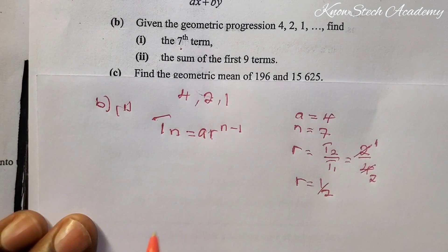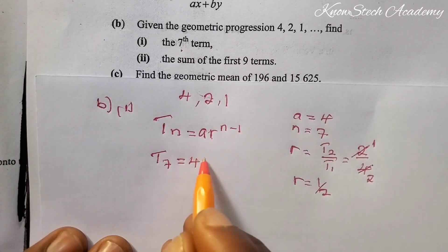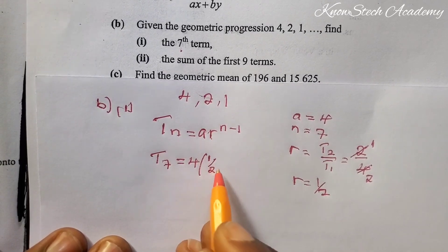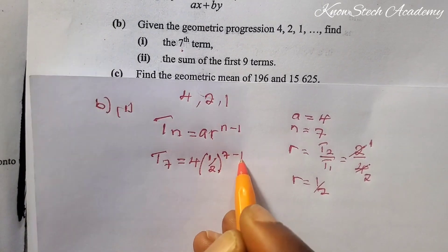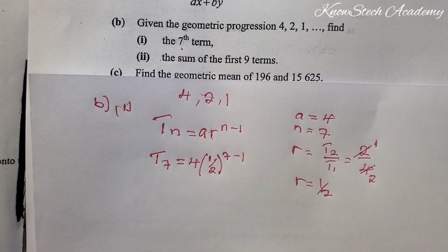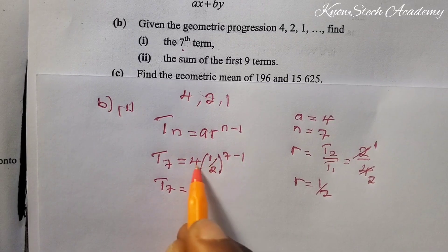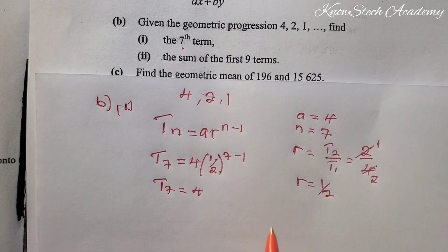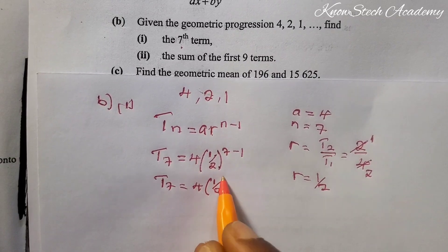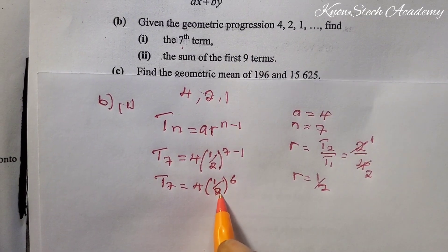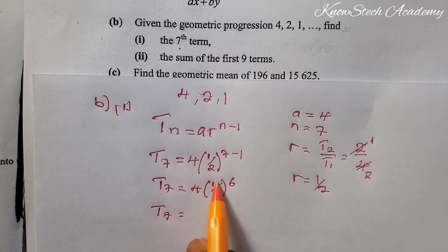Let's substitute. t7 equals the first term 4, times the common ratio (1/2) to the power n minus 1 — that is (1/2) to the power 7 minus 1, which is (1/2) to the power 6. Don't make the mistake of multiplying 4 by one half before applying the exponent — everything inside the bracket is raised to the power 6.